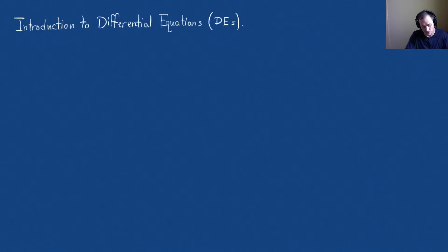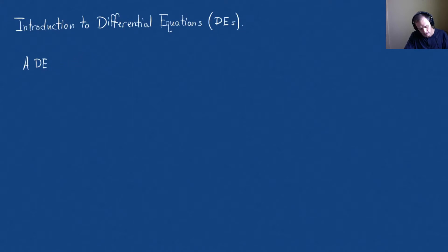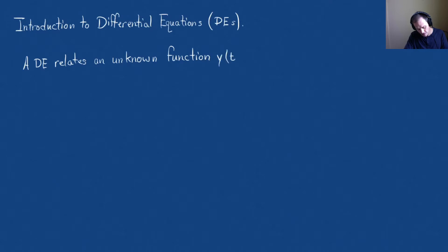So the first thing is: what is a differential equation? A differential equation relates an unknown function — we're going to normally denote our function as y of t. And sometimes we won't even write the 'of t', and I'll explain that in a little bit. A differential equation relates an unknown function y of t and its derivatives.